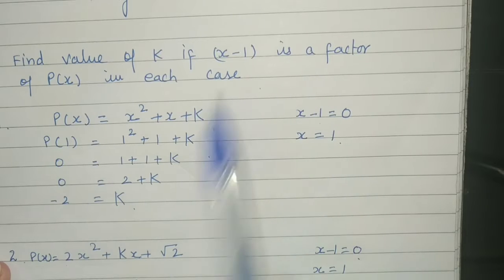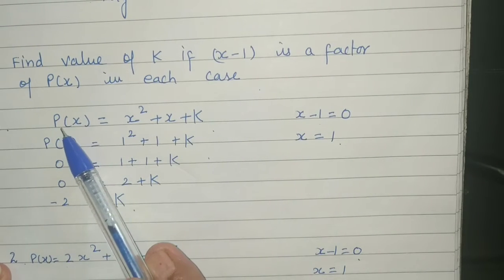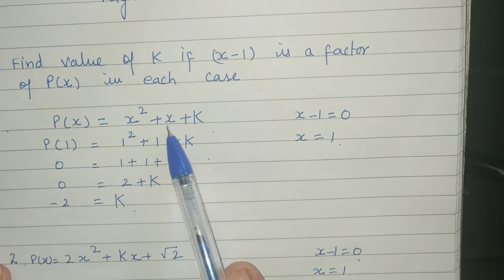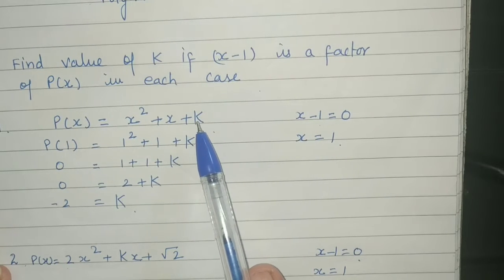x minus 1 is a factor of this polynomial. Polynomial is given to us: x squared plus x plus k. Here we need to find value of k.